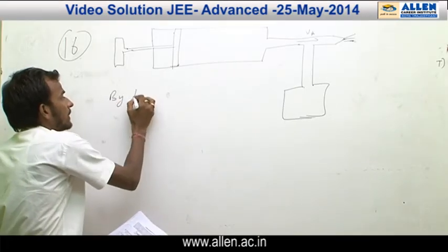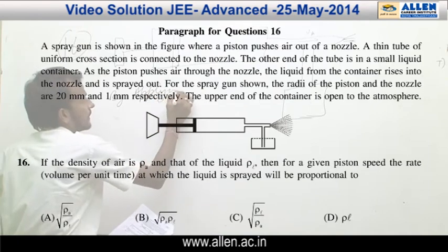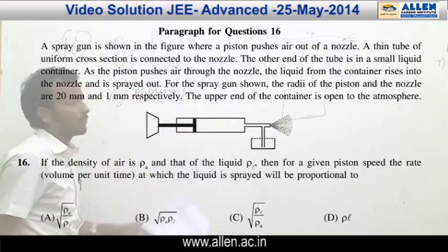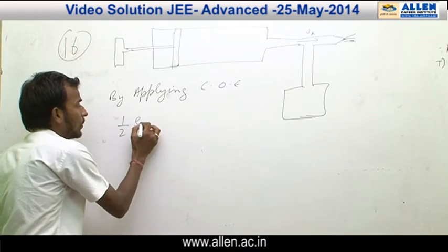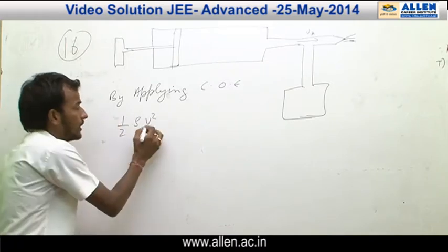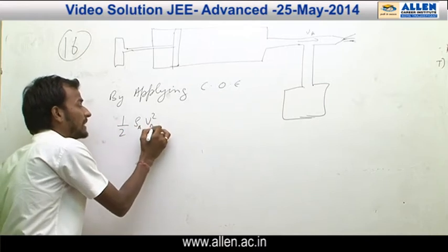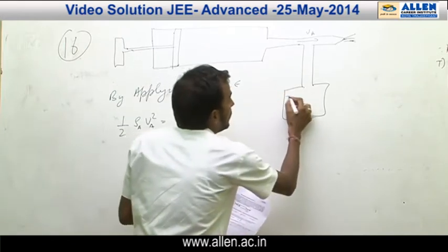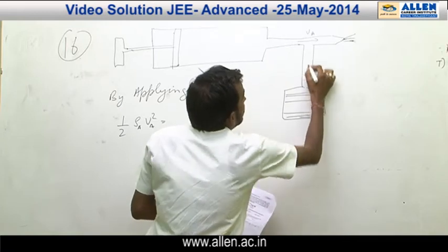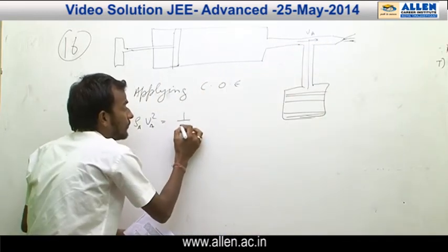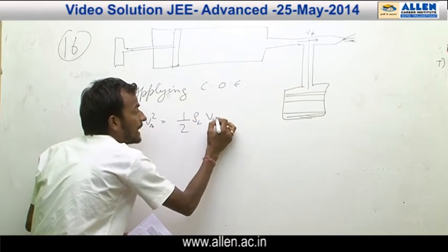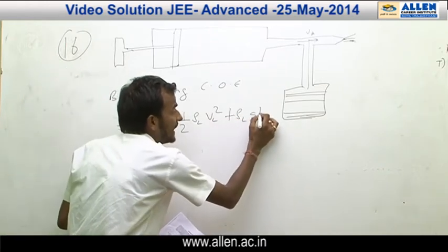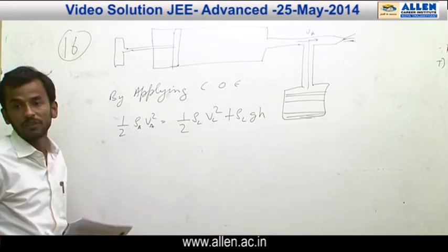By applying conservation of energy: the kinetic energy of air is half rho v squared — kinetic energy per unit volume of air is half rho v squared. This energy will be converted into kinetic energy and potential energy of the liquid in this chamber. So kinetic energy per unit volume for the liquid is written as half rho_l v_l squared, and its potential energy is written as rho_l g h.